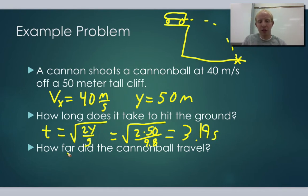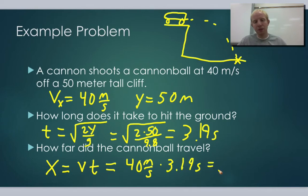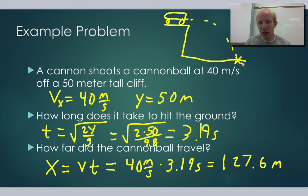Now we use that information for the x direction. How far did the cannonball travel? We use our equation x equals velocity times time. The velocity was 40 meters per second and the time of free fall was 3.19 seconds. Plugging that in, we get that it will hit the ground 127.6 meters away. The seconds cancel out, leaving us with meters. So the cannonball hits 127.6 meters away from the cannon and took 3.19 seconds to fall.